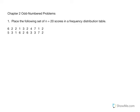These are the solutions for the end of chapter homework problems for chapter 2. Number 1 says look at the following set of 20 scores and place them in a frequency distribution table. In order to create a frequency distribution, we first consider the highest score and the lowest score, so I'm going to identify my highest x value and the lowest.